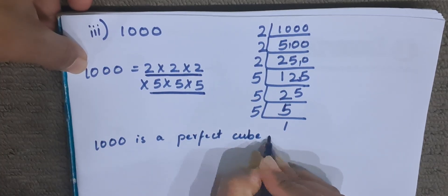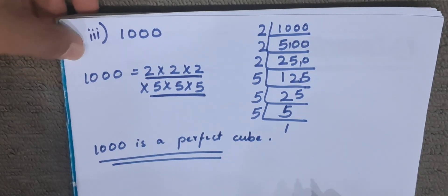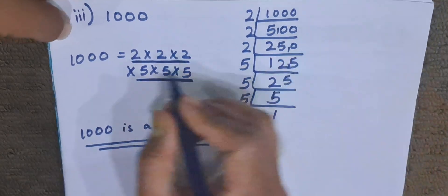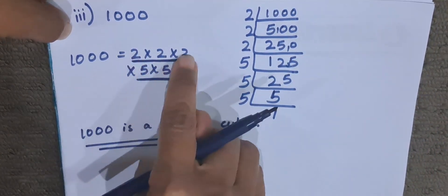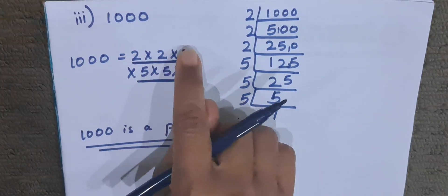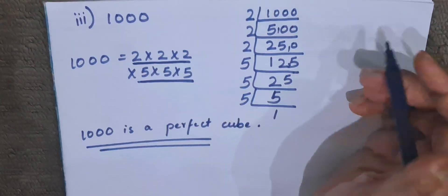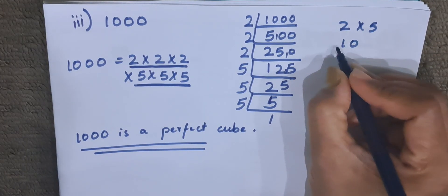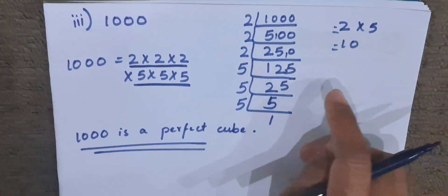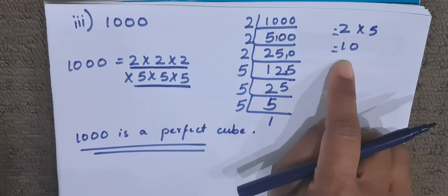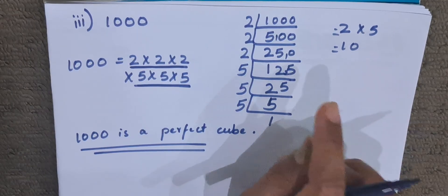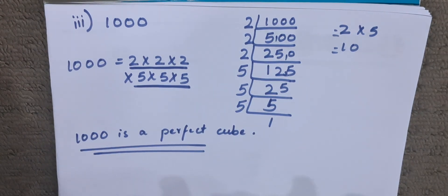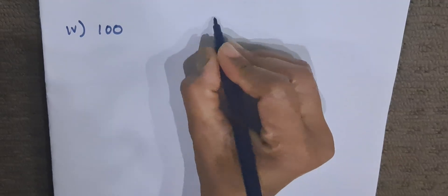If you want to find the cube root of 1000, we take one number from each group: one 2 from the group of three 2s, and one 5 from the group of three 5s. So 2 × 5 = 10. The cube root of 1000 is 10. However, the question only asks if it is a perfect cube, so the answer is: 1000 is a perfect cube.